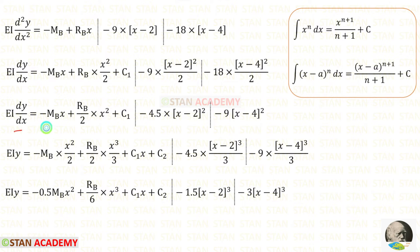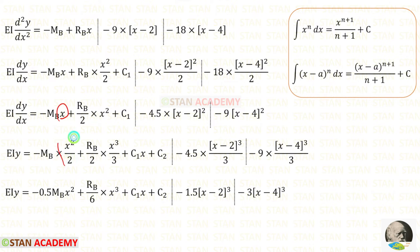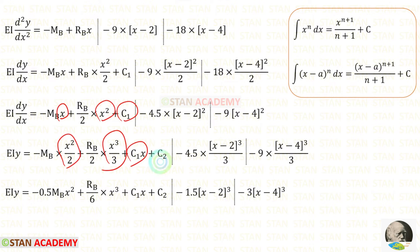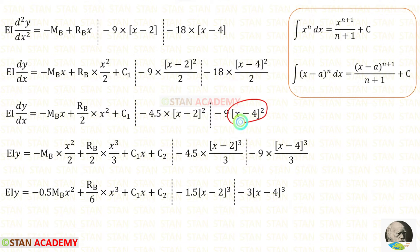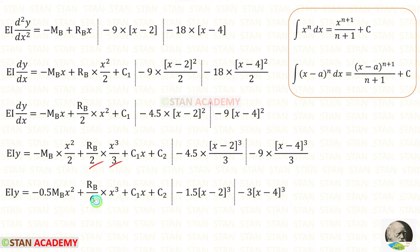Now let us integrate this equation again. When we integrate dy/dx we get y. When we integrate X we get X²/2. When we integrate X² we get X³/3. When we integrate C1 we get C1·x. C2 is the new constant. When we integrate (X−2)² we get (X−2)³/3. When we integrate (X−4)² we get (X−4)³/3. 2×3 gives 6, 4.5/3 gives 1.5, and 9/3 gives 3.